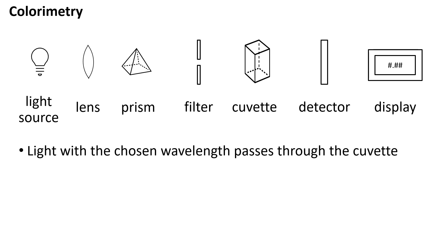Light of the chosen wavelength travels through the cuvette. This is a small plastic or sometimes glass cuboid container filled with the sample that you are analysing. It is very important that the surfaces of the cuvette are as clean as possible. Avoid touching these surfaces.